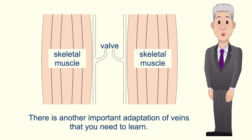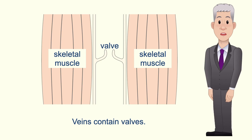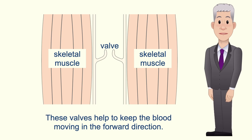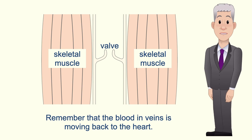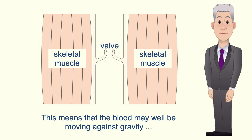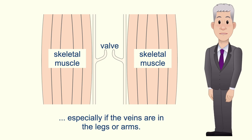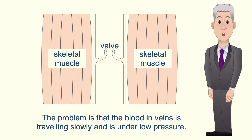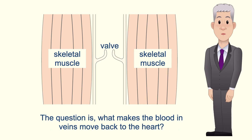There is another important adaptation of veins that you need to learn. Veins contain valves and these valves help to keep the blood moving in the forward direction. Remember that the blood in veins is moving back to the heart, which means the blood may well be moving against gravity, especially in the veins of the legs or arms. The problem is that the blood in veins is traveling slowly and is under low pressure, so what makes the blood in veins move back to the heart?